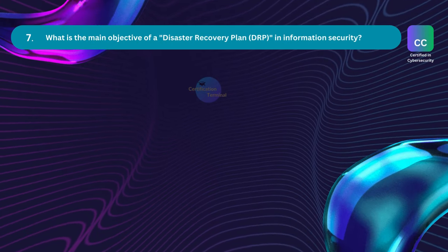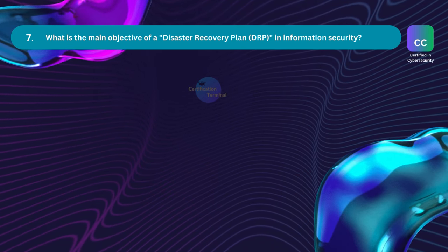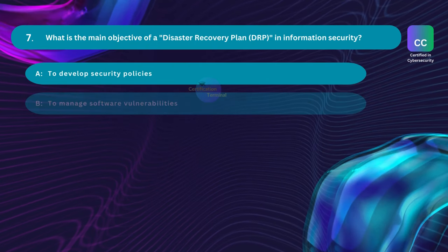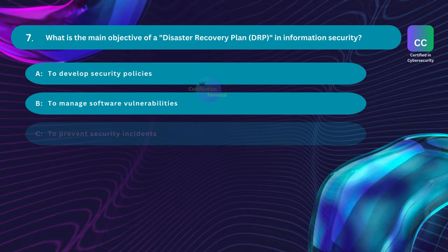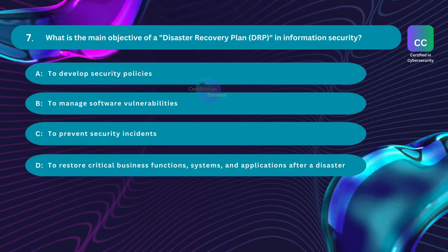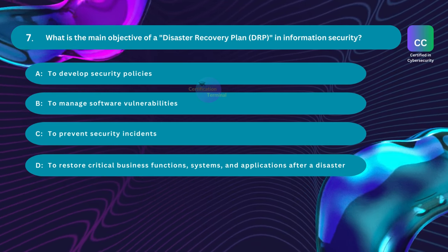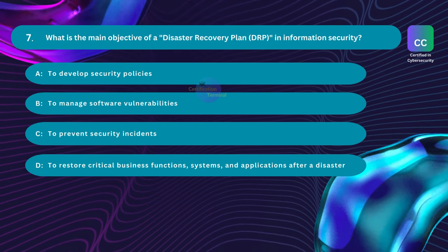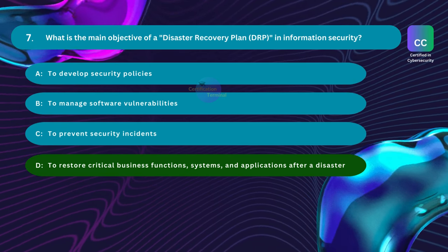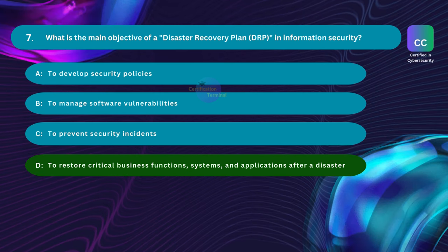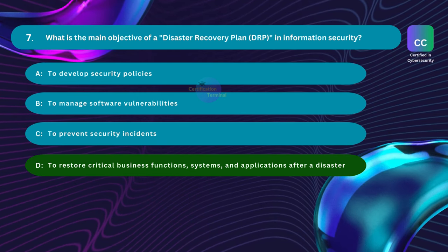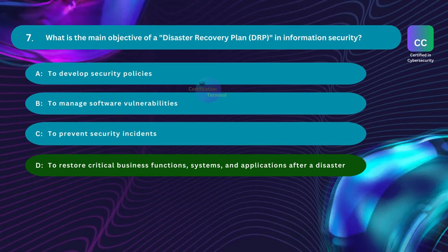Question number seven: What is the main objective of a disaster recovery plan in information security? Option A: To develop security policies. Option B: To manage software vulnerabilities. Option C: To prevent security incidents. Option D: To restore critical business functions, systems, and applications after a disaster. The correct answer is Option D. The primary objective of a disaster recovery plan is to provide a structured and organized approach to restoring critical business functions, systems, and applications in the aftermath of a disaster, including predefined processes, roles, and procedures to ensure timely and effective recovery.